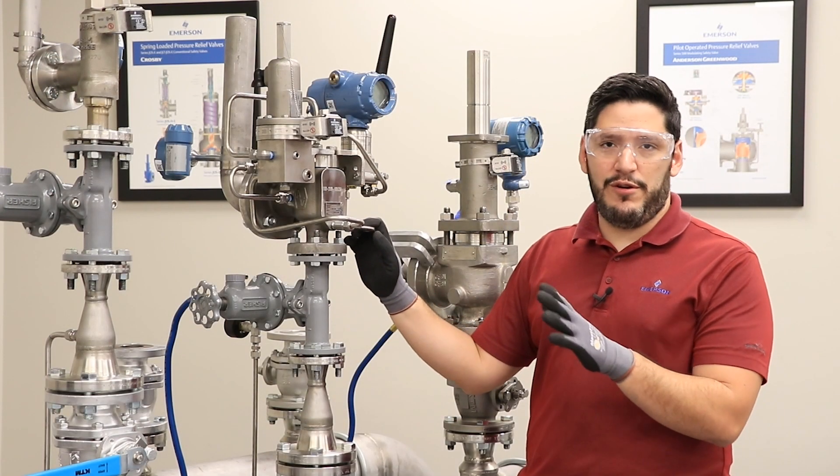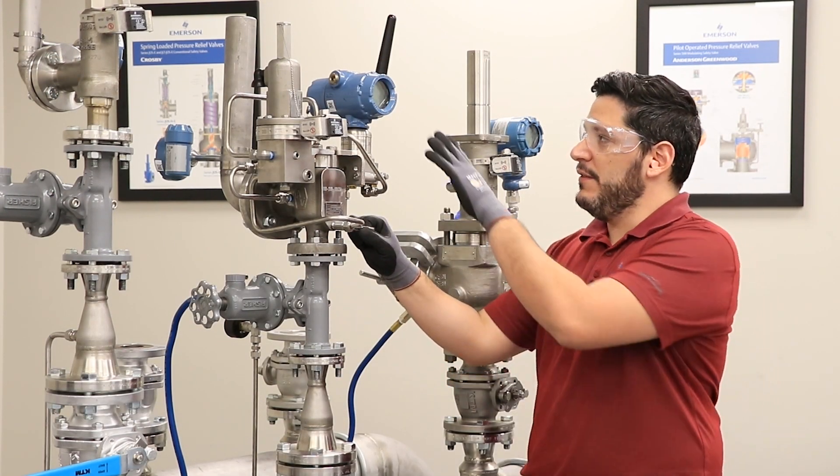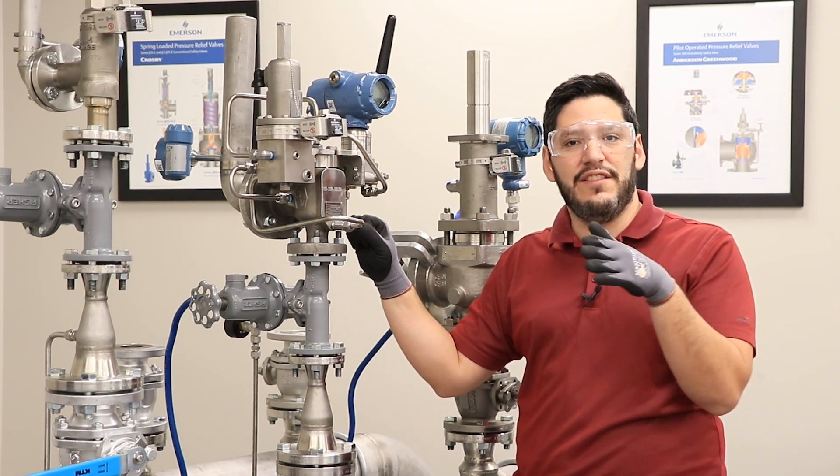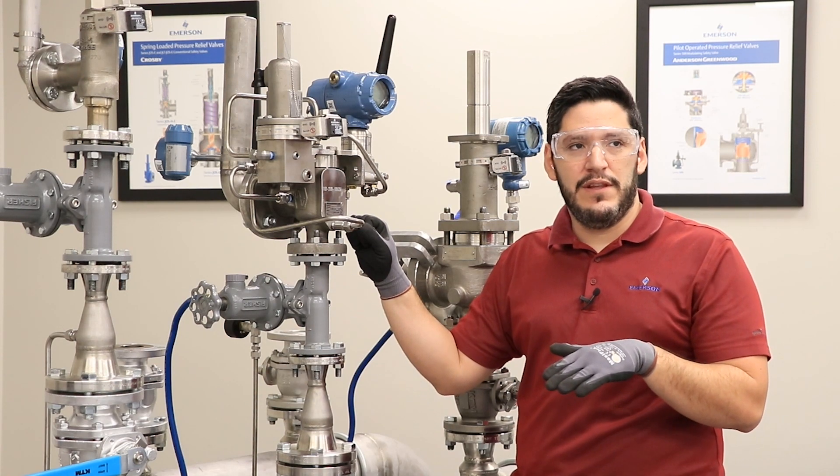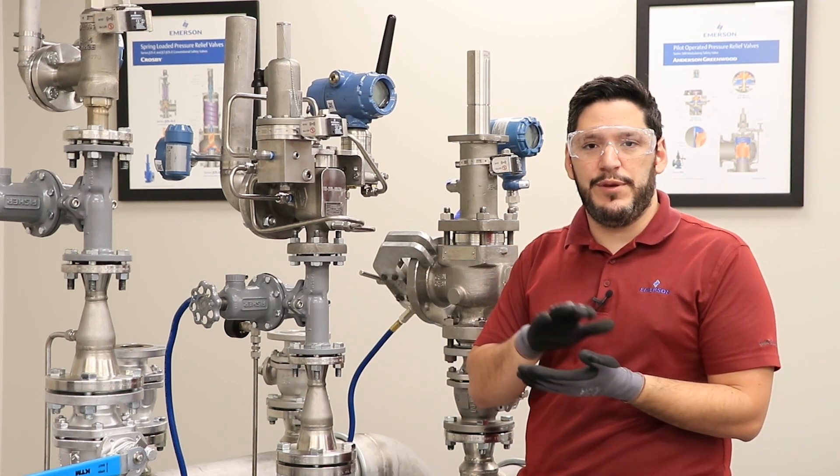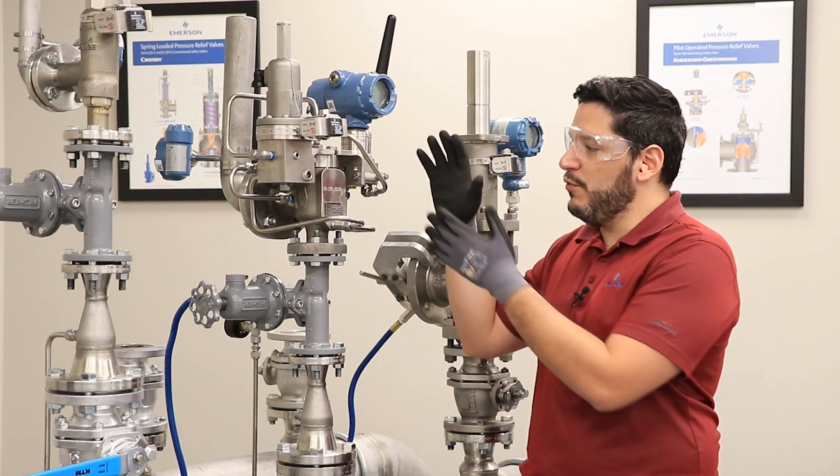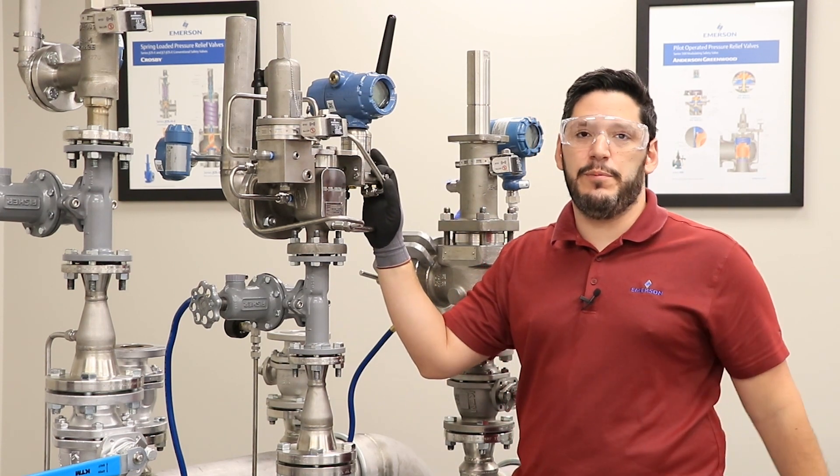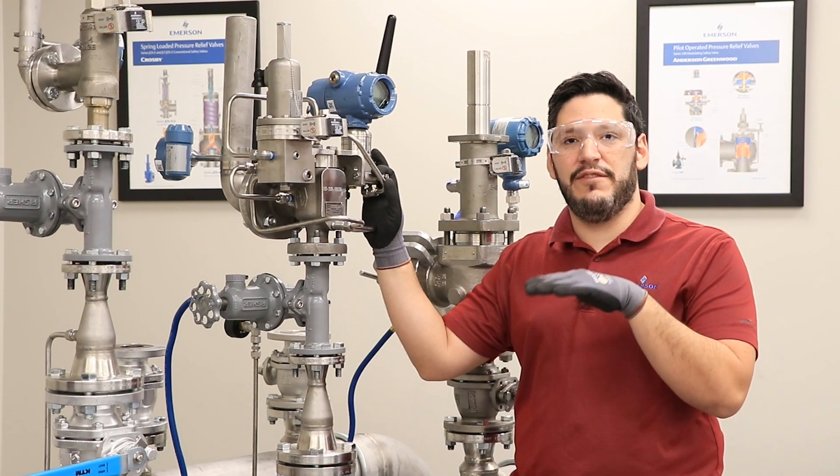As you can see from the graph we just saw, the differential pressure gets correlated to that valve percent lift as we track the lift over time. Having this information can help you quantify what was really happening at the outlet of the PRV when your PRV was open. So you can quantify the flow through that valve.